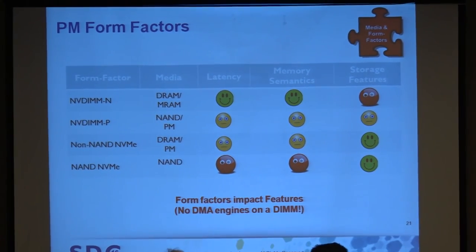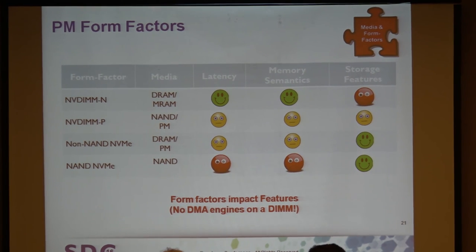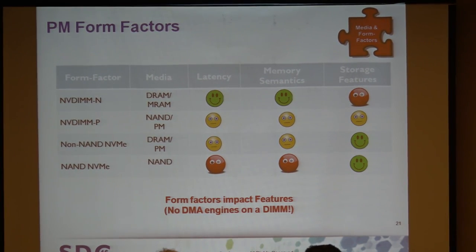Form factors are very important. On the PCIe side we have the U.2 form factor — the two-and-a-half-inch PCIe drive with a good connector that's potentially hot-swappable. That's really good for front-loaded storage systems where you may have to pop drives in and out. The key takeaway from this slide: form factor impacts features. The only tagline to remember is there are no DMA engines on a DIMM. DIMMs are great — they're memory, they're really close to the CPU — but they don't have a DMA engine.